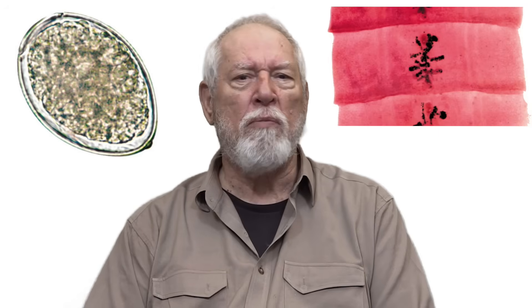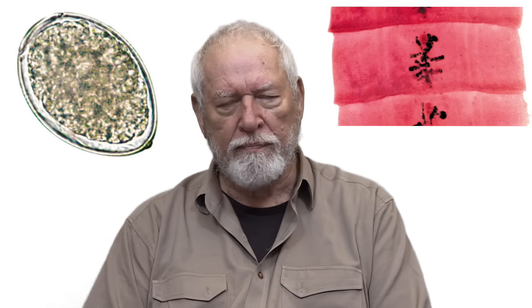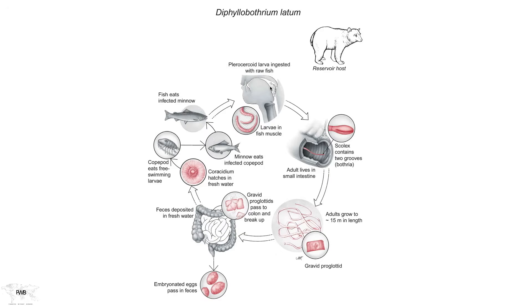The life cycle of all tapeworms is complicated, but none are more complicated than this one. The infection in humans begins by the ingestion of raw or undercooked fish. That's why it's called the fish tapeworm — not because it infects fish, but because the adult worm infects humans through the act of eating raw fish.